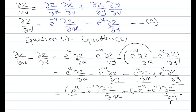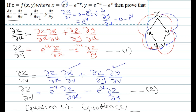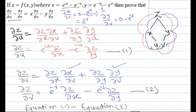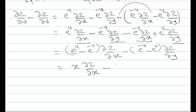The right-hand side we need is x · (∂z/∂x) - y · (∂z/∂y). Since x = e^u - e^(-v), the coefficient of ∂z/∂x matches. Taking the minus sign common from the bracket for the y term, the remaining factor becomes -(e^(-u) - e^v) = e^v - e^(-u), which is the value of -y. Therefore this equals x · (∂z/∂x) - y · (∂z/∂y), which is what we required to prove.